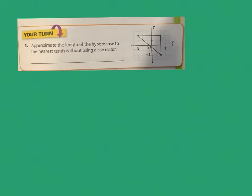One more example. They want us to do this without a calculator — we can do that. They want us to approximate the length of the hypotenuse to the nearest tenth. Looking at it, it's going to be somewhere 4 to 5-ish, maybe more like 5. That would be my first approximation, but let's go ahead and get a little more accurate by using the Pythagorean theorem.